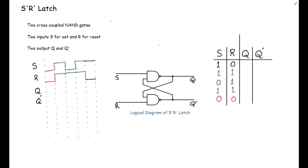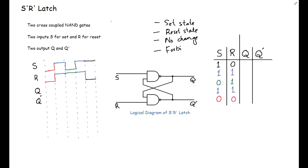Before going into more detail, we need to understand that the S̄R̄ latch has four possible states: the Set state, the Reset state, the No-Change state, and finally the Forbidden state. Keep in mind that the Set state and Reset state are the most important, because these are the two states which remember some value of the input.